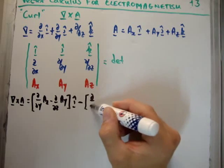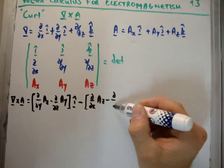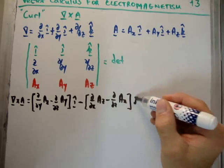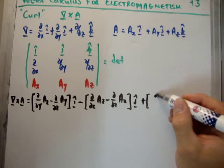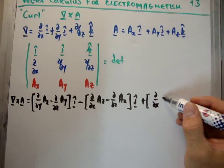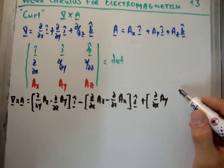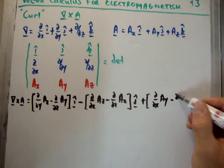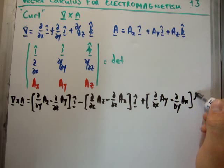Minus del/del x A_z minus del/del z of A_x in the j hat direction. Plus del/del x of A_y, excuse me, and we are going to take away from it del/del y of A_x, and this is in the k hat direction.